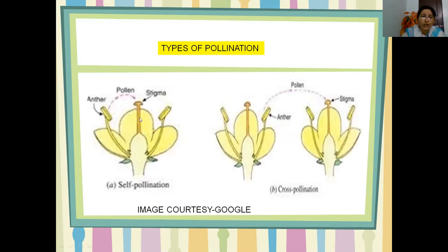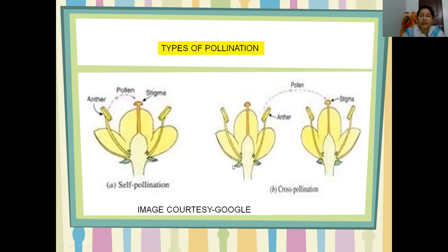This is self-pollination. The central part is the female part — stigma, style, and ovary. Ovule and egg are present inside the ovary. These parts are the stamens — the anther and the filament. If the pollen grains from the same flower are transferred to the stigma of the same flower, it is called self-pollination. In cross-pollination, the pollen grains from the anther of one flower are transferred to the stigma of another flower.